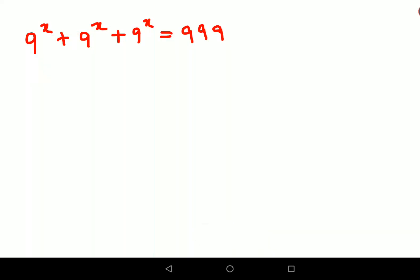Welcome everyone. So today we are going to solve a very nice indices problem. 9 raised to x plus 9 raised to x plus 9 raised to x equals to 999.